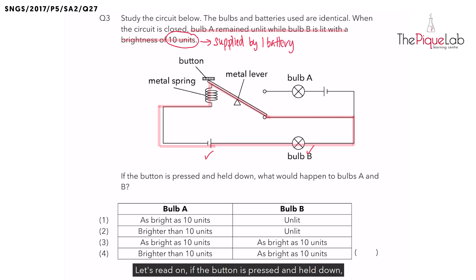Let's read on. If the button is pressed and held down, what will be the new position of the metal lever? Imagine the metal lever just like a seesaw. So, if you were to press the button down, the metal lever will move to this new position.